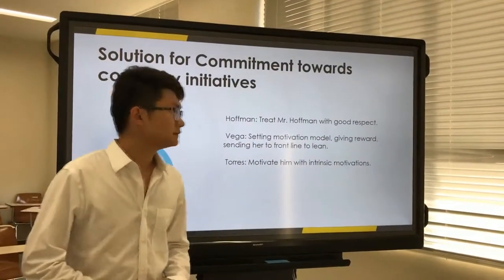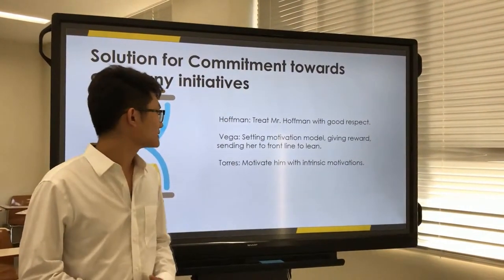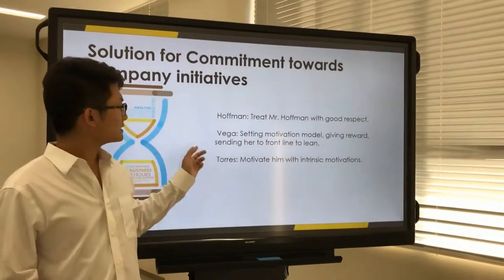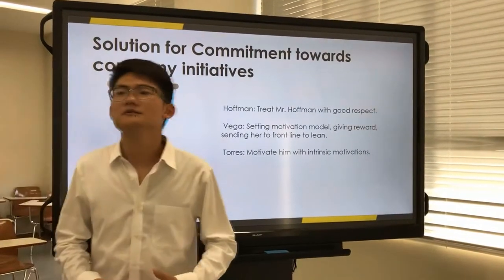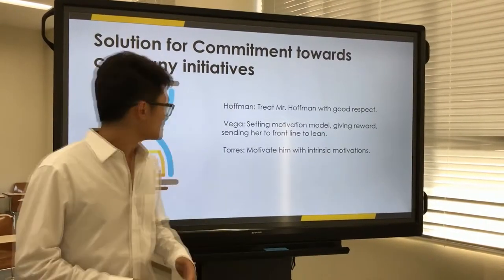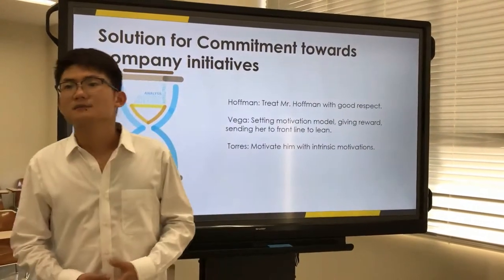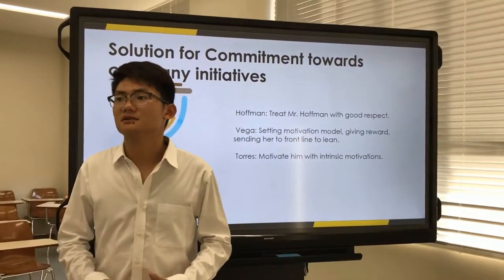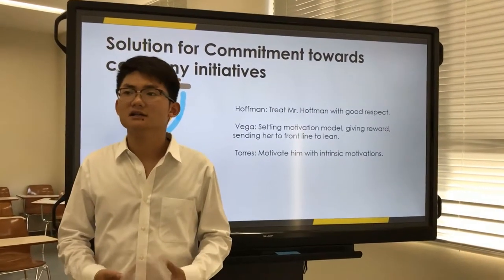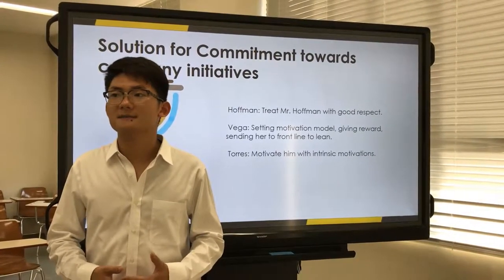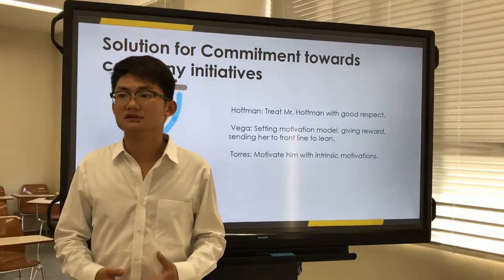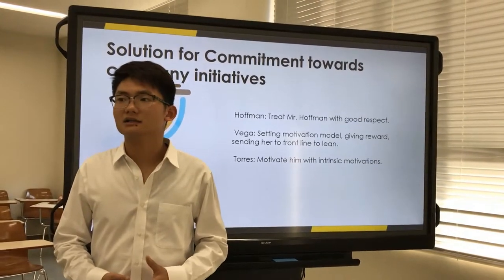For Vega, applying a motivation model is important — by giving her rewards and, because she didn't know the products well, it would be better to send her to the front line to learn. For Torres, who has a self-serving perception when working by himself, Richardson should praise and appreciate him and encourage him by accepting his ideas. Since Torres has a high need for autonomy, giving him the authority to handle the cut flower business alone would be a good idea.